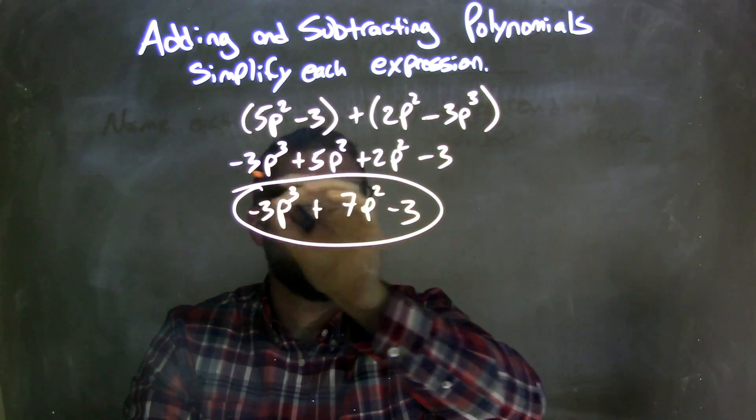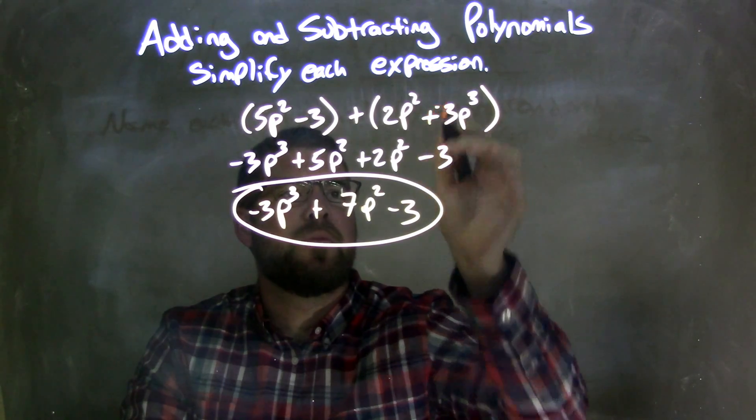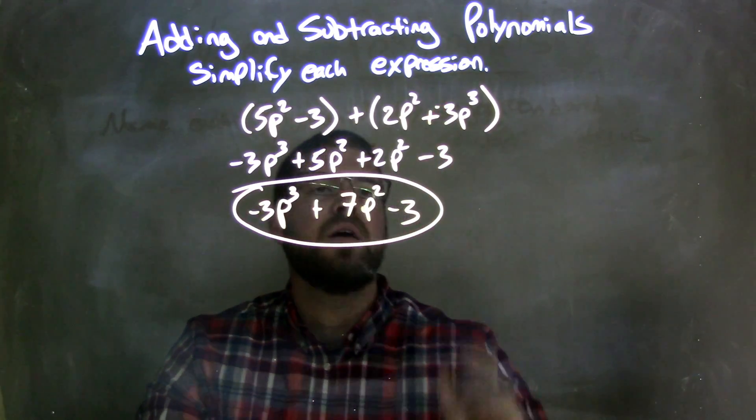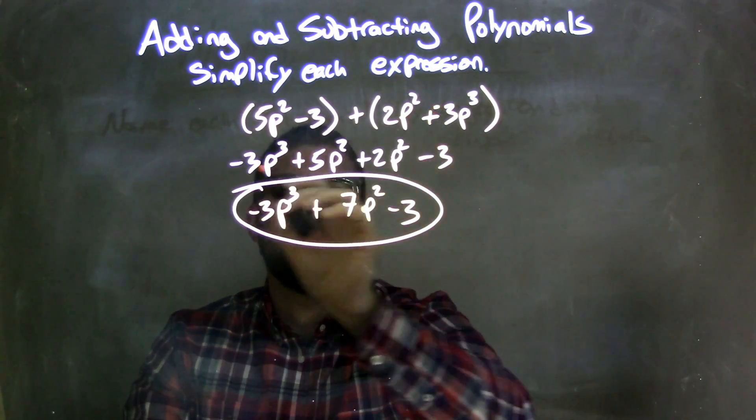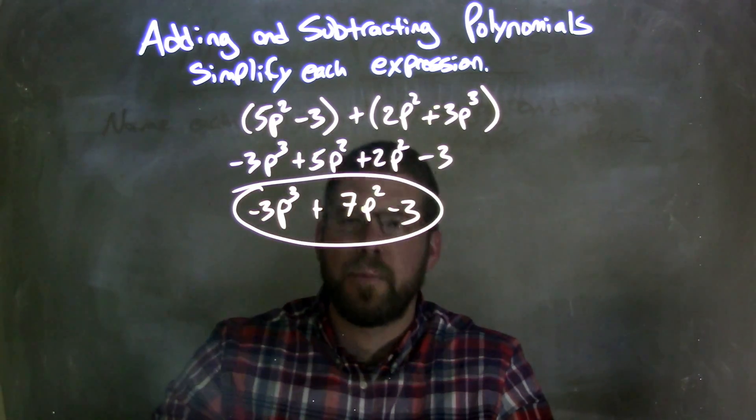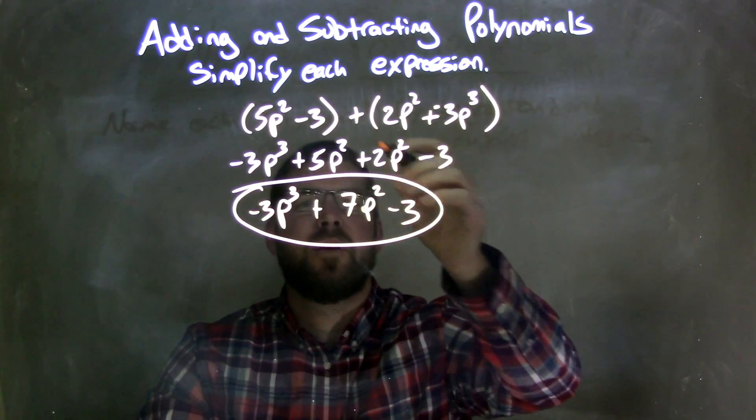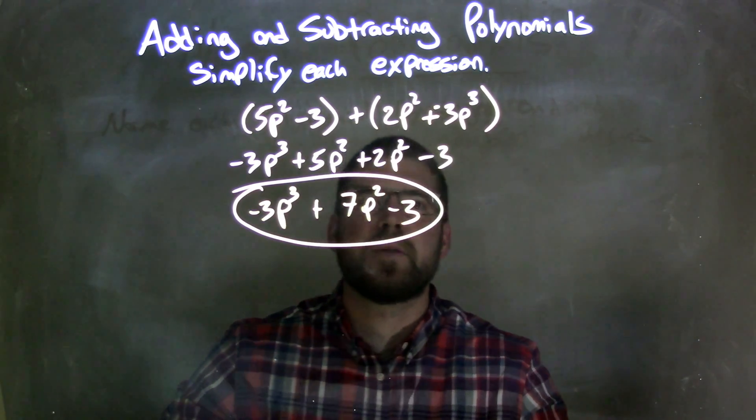If you want to think about it, if it makes it easier to bring that out here, you can change that to be a plus and negative. That's fine. You can do that, and then see that it's a negative 3p to the third out front. I can do the same thing with a plus and negative 3, but I just thought that it was minus 3.